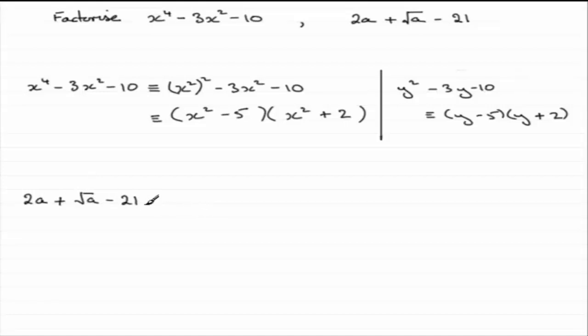Now this is a quadratic, a quadratic in root a. Because you should be able to see that we could write this as 2 times square root of a all squared. And then we've got plus root a minus the 21. So this is a quadratic in root a.